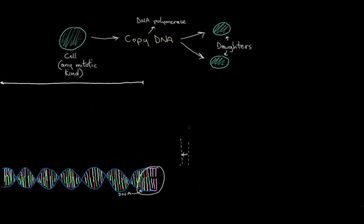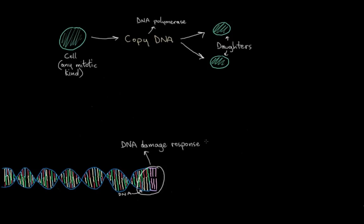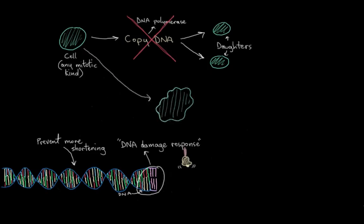But not to worry, we have a contingency plan built in. Once the telomeres get too short, the cell initiates a DNA damage response. It gives up its ability to divide because it really wants to prevent any more shortening of this chromosome. So it loses its ability to divide. By doing that, it has become what's called a senescent cell.